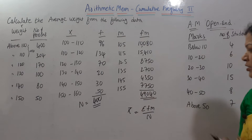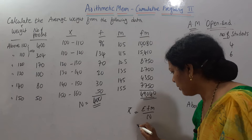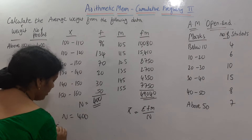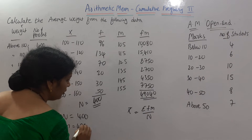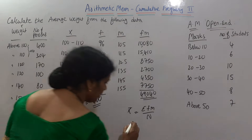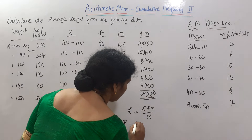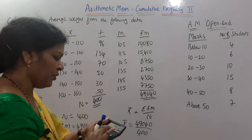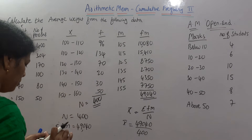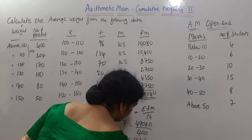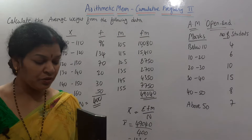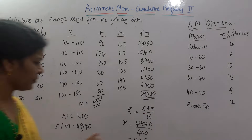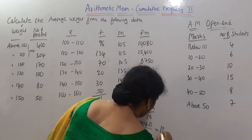Applying the formula: N = 400 and Σfm = 49,040. Therefore X̄ = 49,040 / 400 = 122.6. Please take a screenshot before I clear this. The answer is 122.6.